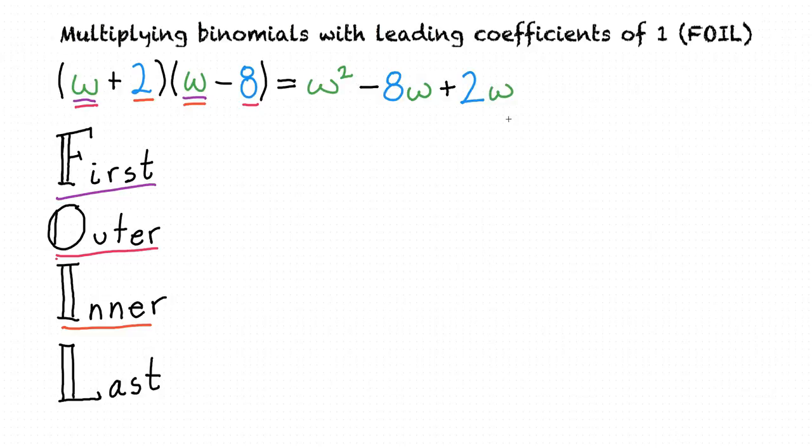And finally, we're going to multiply the last term in each of our binomials. In this case, the two and the minus eight. Two times negative eight is negative sixteen.